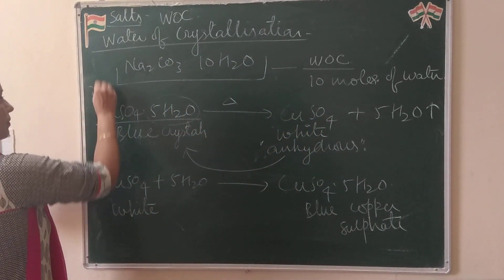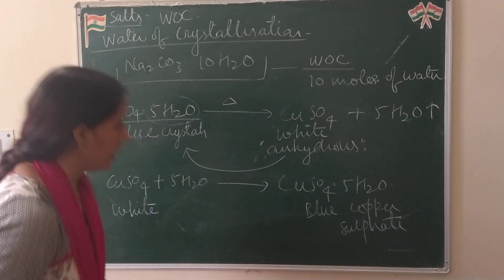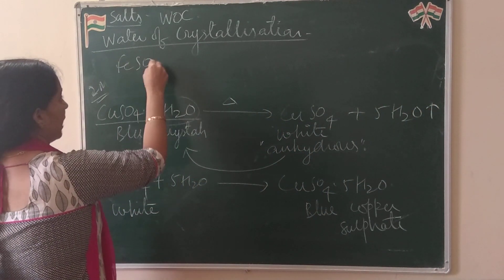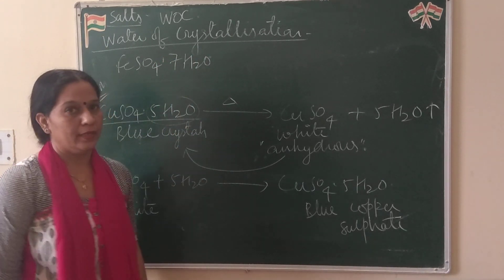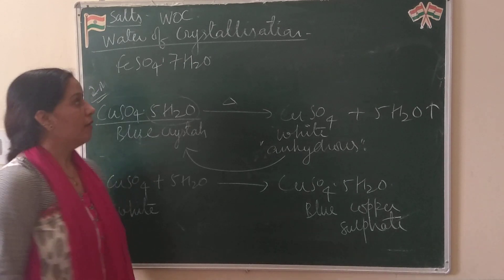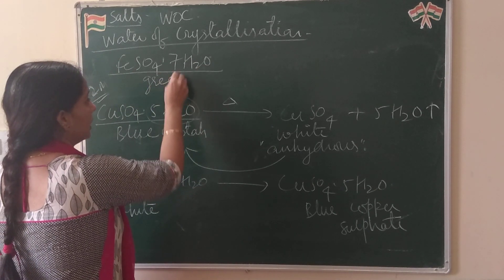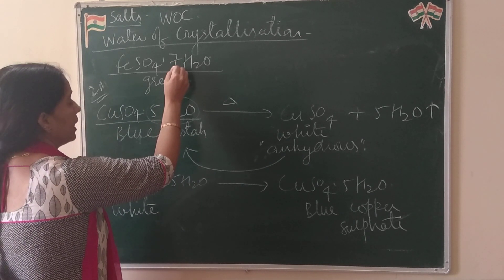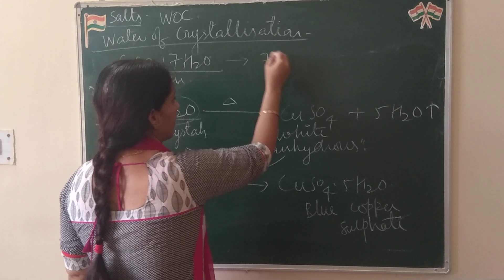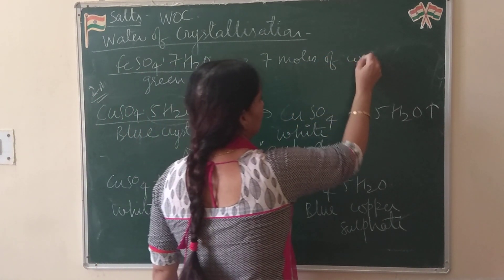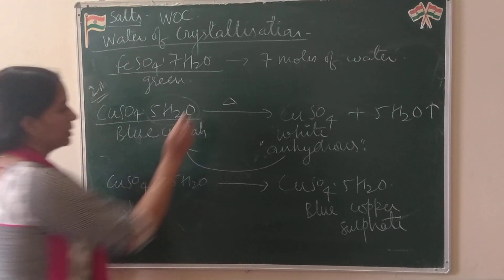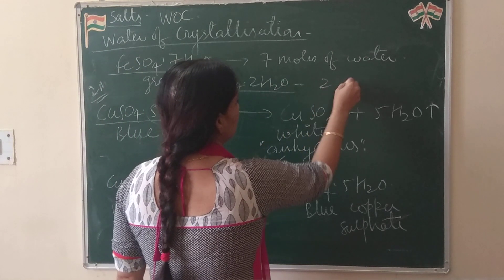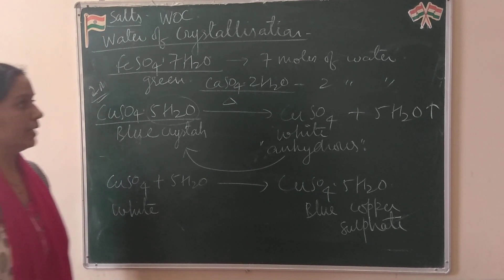This is an activity worth a 2-mark question — learn it properly. There are other formulae which contain water of crystallization. For example, FeSO4·7H2O — ferrous sulfate crystals, which are green in color. From chapter 1 thermal decomposition, when heated they produce brown ferric oxide. Its WOC is 7 molecules of water. Similarly, calcium sulfate CaSO4·2H2O is gypsum. Its WOC is 2 molecules of water.